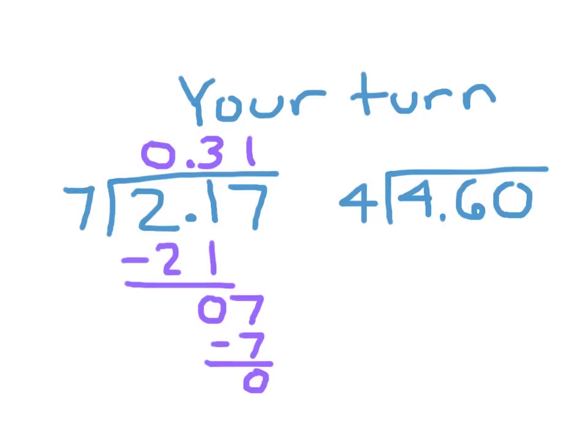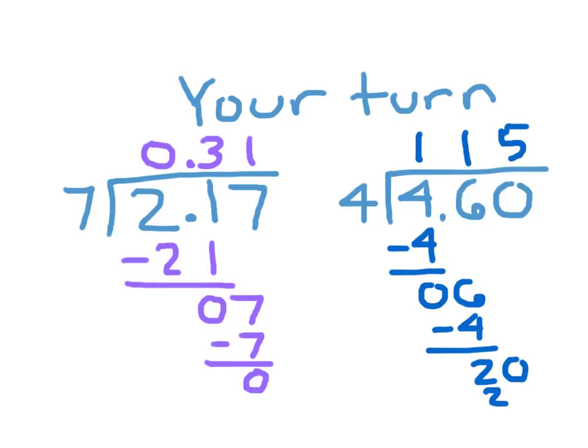For the other one here, 4.60, 4 goes into 4 one whole time. 1 times 4 is 4. 4 minus 4 is 0, and we bring down the 6. 6 divided by 4 is 1. 1 times 4 is 4. And 6 minus 4 is 2. Bring down the 0. 20 divided by 4 is 5, because 5 times 4 is 20, and 20 minus 20 is 0. So there is no remainder there.